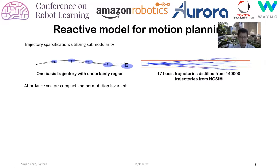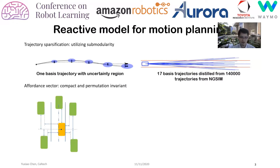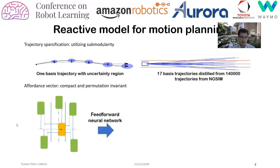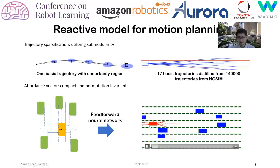We use an affordance vector as a compact and permutation-invariant representation of the scenario. We record all distances that are independent of how you order the adjacent vehicles, which is a huge advantage for training. This is then fed to a feedforward neural network that gives us the trajectory prediction.